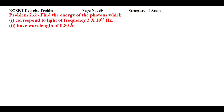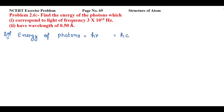First, we'll see the formulas in terms of frequency and wavelength. The energy of a photon is E = hν, and if we have to find the value in terms of wavelength, it will be E = hc/λ.